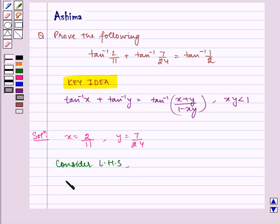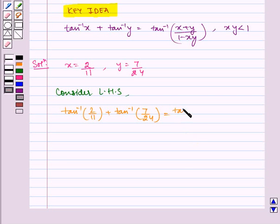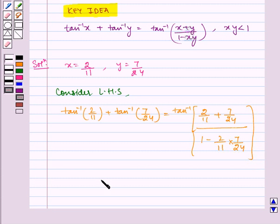We get tan inverse of 2 by 11 plus tan inverse of 7 by 24 is equal to tan inverse of 2 by 11 plus 7 by 24 whole divided by 1 minus 2 by 11 multiplied by 7 by 24. Which is equal to tan inverse of 48 plus 77 by 264 whole divided by 264 minus 14 by 264.